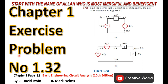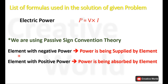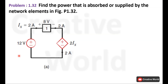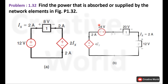Welcome to Creative World viewers. Today I will solve exercise problem number 32. In this scenario, the basic power formula — voltage multiplied by current — will be used along with passive sign convention theory. According to this theory, the element with negative power is considered a power supplier, and the element with positive power is considered a power absorber. First, read the scenario: find the power that is absorbed or supplied by the network elements in figure 1.32, which contains two circuits.